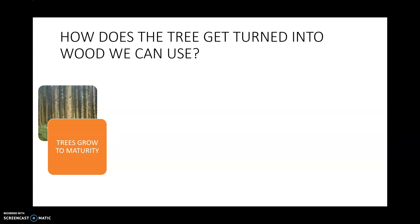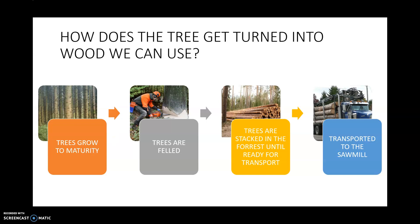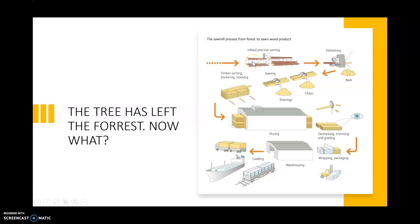How does the tree get turned into wood we can use? After it has been thinned a few times, the trees grow to maturity. From there the trees are felled. The trees are stacked in the forest until they are ready for transport, and finally they are transported to the sawmill.